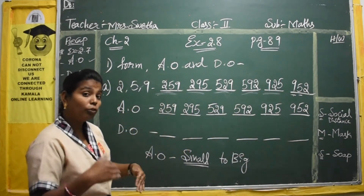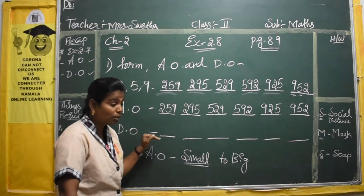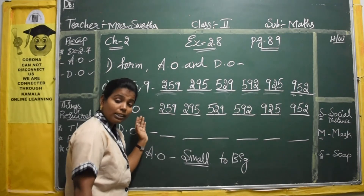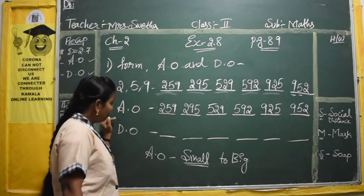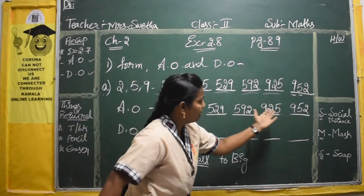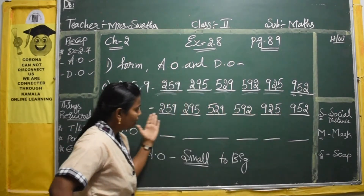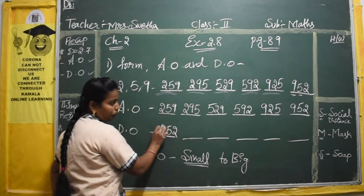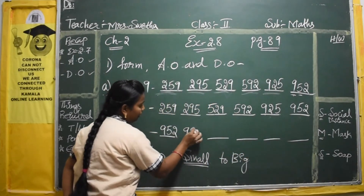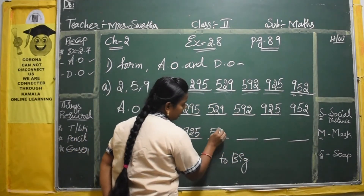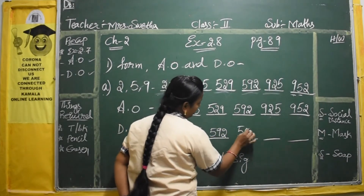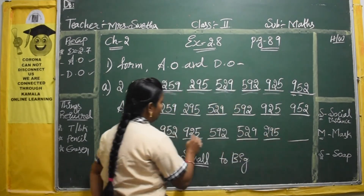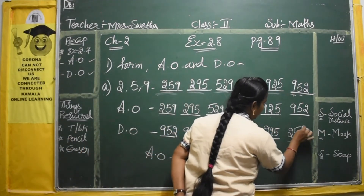Now write the descending order. Descending order means biggest to smallest. If you have the ascending order already written, descending order is very easy — just write it from the last number. So descending order: 952, 925, 592, 529, 295, 259.